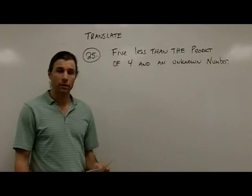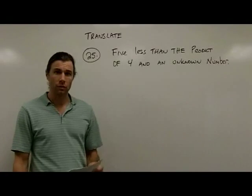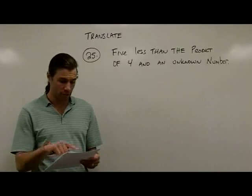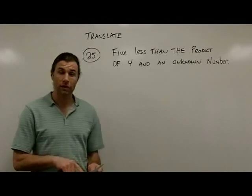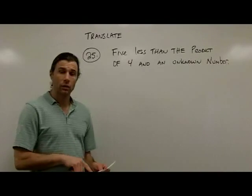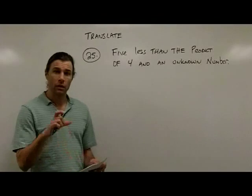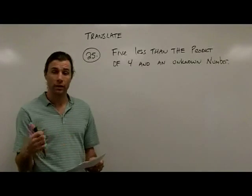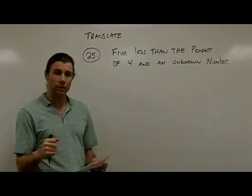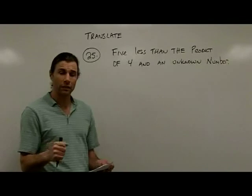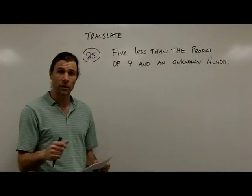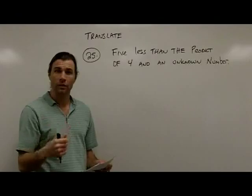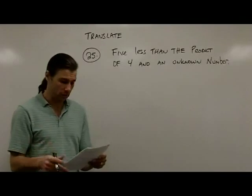The next type of problem in your test review asks you to translate. For questions 23 through 27, we're asked to translate a written statement into an algebraic expression. If it's an algebraic expression, there's not going to be an equal sign — we're just going to translate the words directly into an expression.